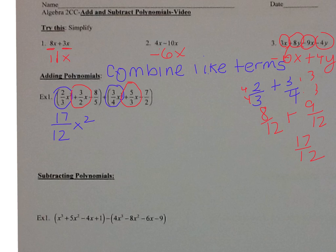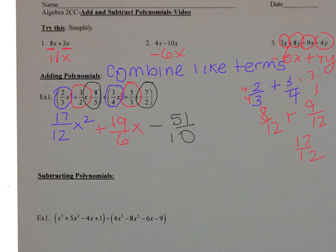Then I'm combining three-halves x plus five-thirds x, which is nineteen-sixths x. And negative eight-fifths plus negative seven-halves gives negative fifty-one tenths.